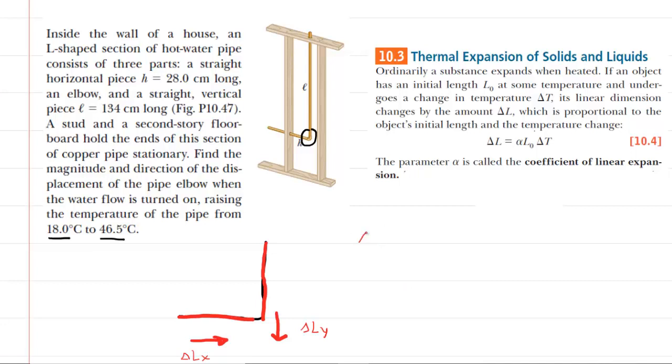So let's begin with the X direction. We'll do delta L in the X direction. And this is going to equal alpha. Now alpha is a coefficient of linear expansion. And this is a value that is sometimes given to you in the question or you may have to look it up in a reference table. We will note that the pipe is made from copper.